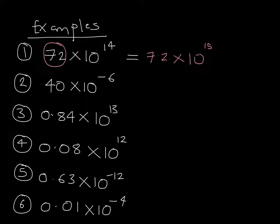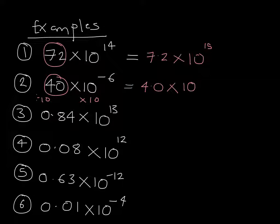Question 2: 40 times 10 to the power of negative 6. The number 40 is 10 times too big, so we divide it by 10 to get 4.0. As a result, the other half of the number has to be multiplied by 10, which means we are increasing the power. So 10 to the minus 6 increases by a factor of 10, meaning its power becomes more positive, giving us 10 to the power of negative 5.